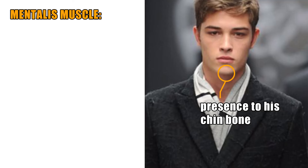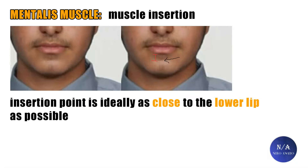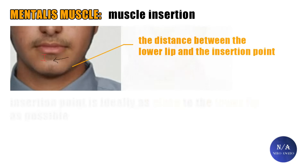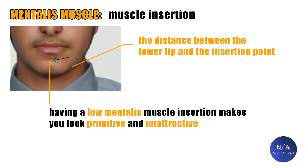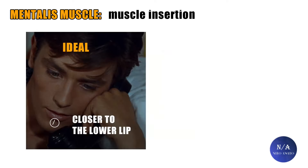A trait I consider even more important than how large and pudgy your chin muscle is would be your mentalis muscle insertion. A good mentalis muscle insertion would be that the insertion point is ideally as close to the lower lip as possible, if not directly below it. Having an insertion point relatively far from your lower lip can make you look primitive and unattractive. The black arrow points to the insertion point, and the red part shows the distance between the lower lip and the insertion point — you can tell how huge that distance is. Having a low mentalis muscle insertion makes you look unattractive.